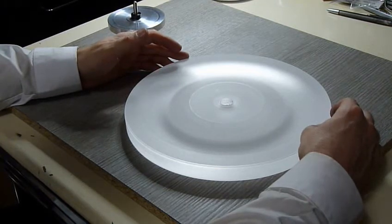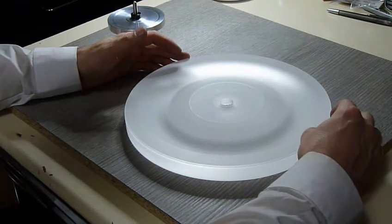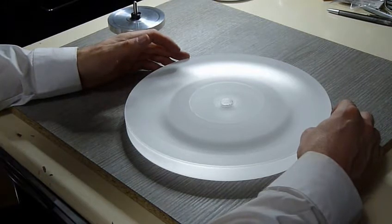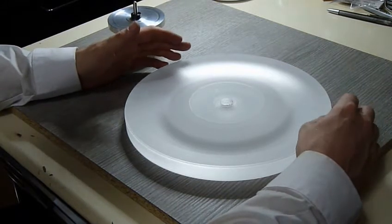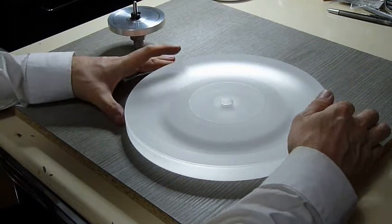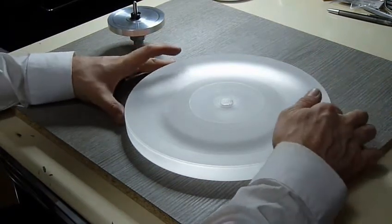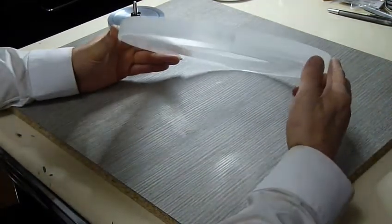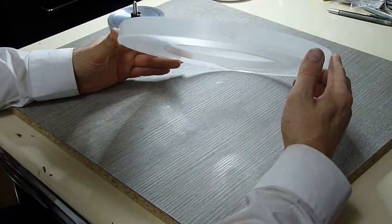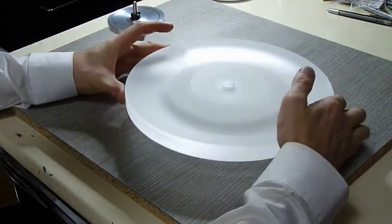A 12mm thick acrylic platter will weigh just under a kilogram. So you're losing a lot of mass there, which isn't ideal. You want to be as close to 2kg as possible. So in order to get that mass, you've got an inch thick piece of acrylic that I've machined into a platter.